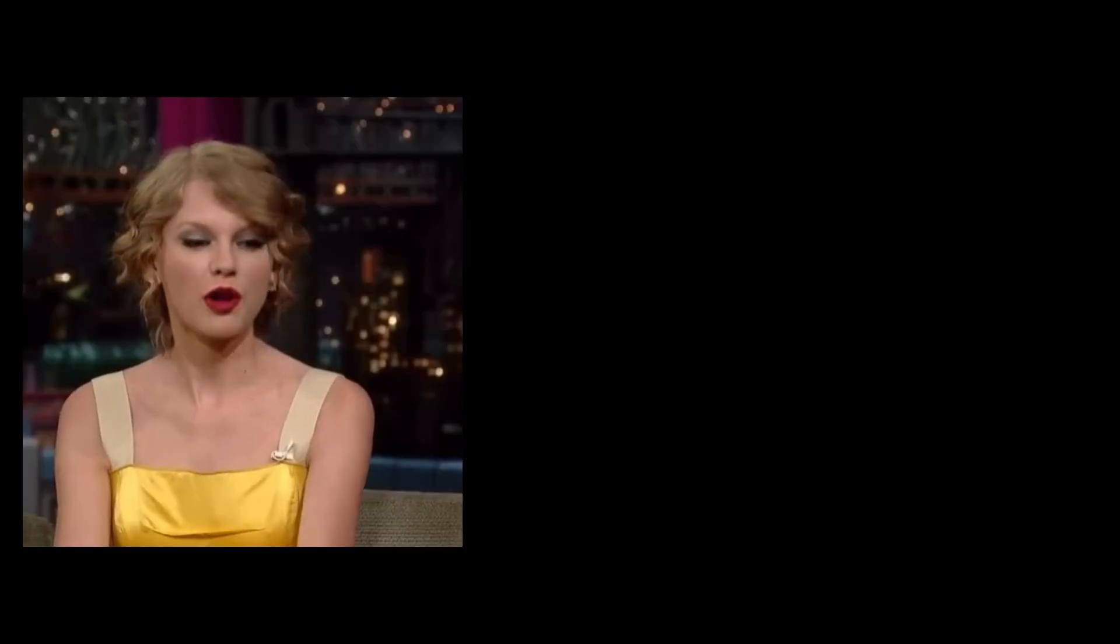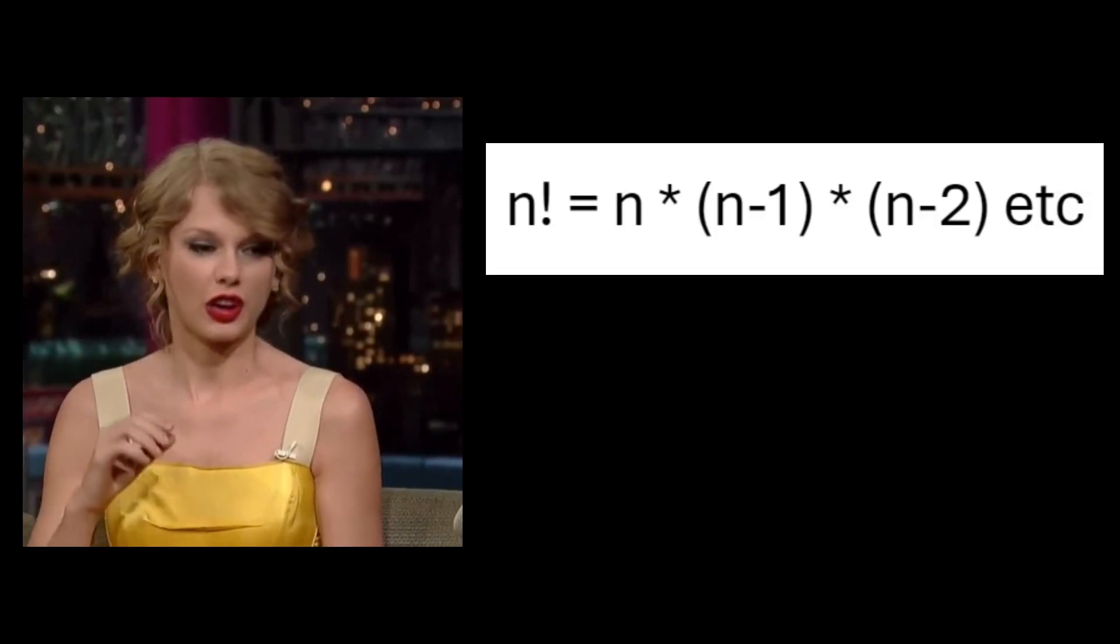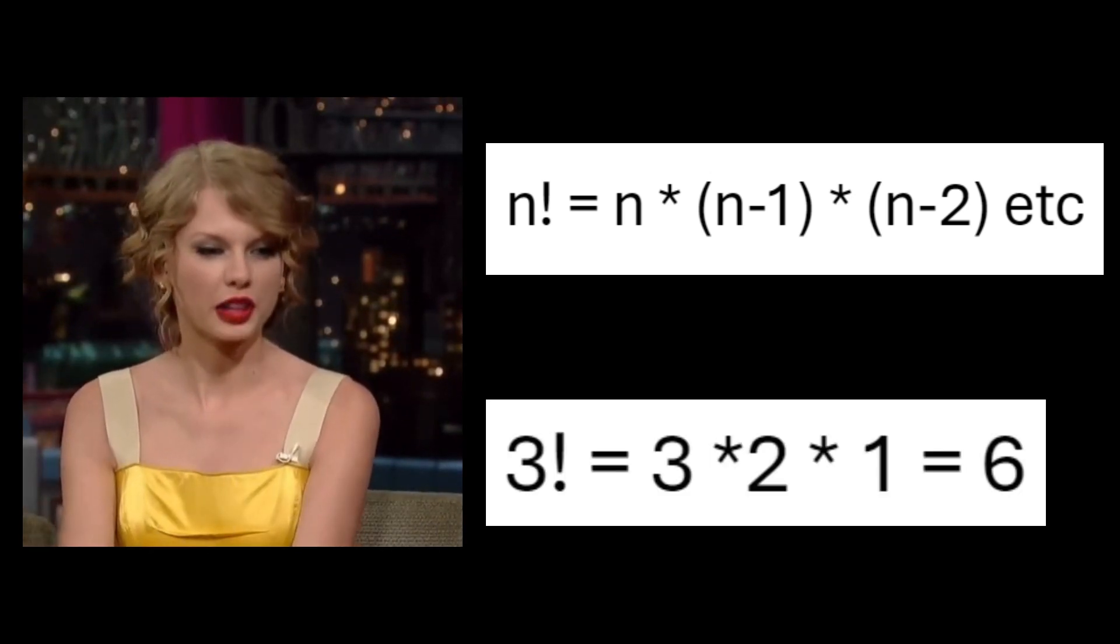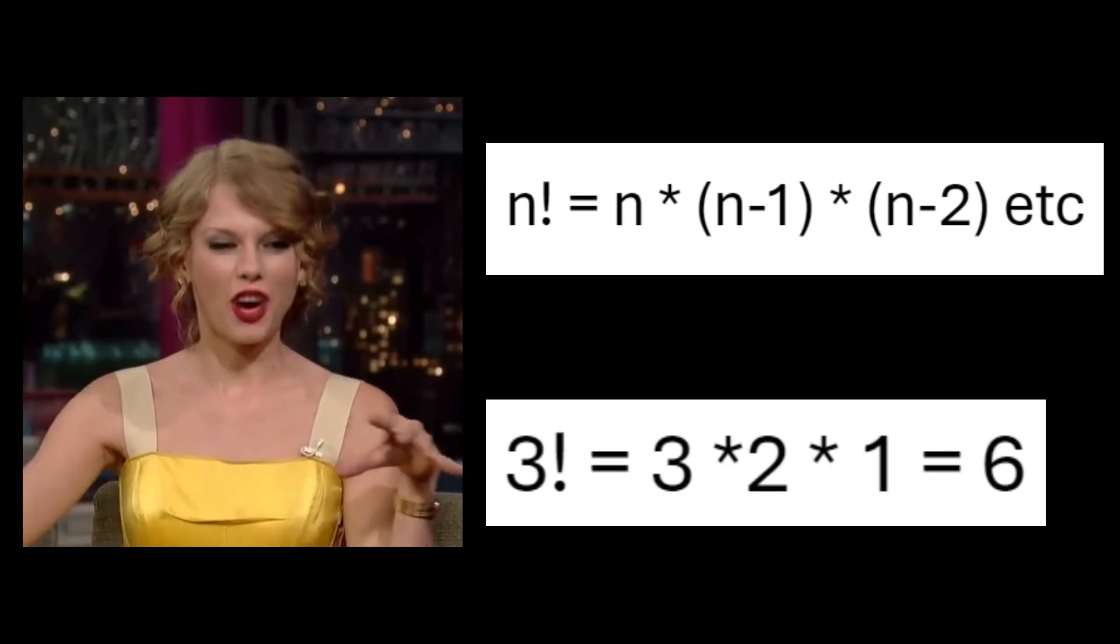Okay Tay-Tay, but what is a factorial? And what is a? A factorial is an operation we perform on a positive integer. It means perform a repeated multiplication on the integer n by n minus 1, n minus 2, and so on until you get to 1.